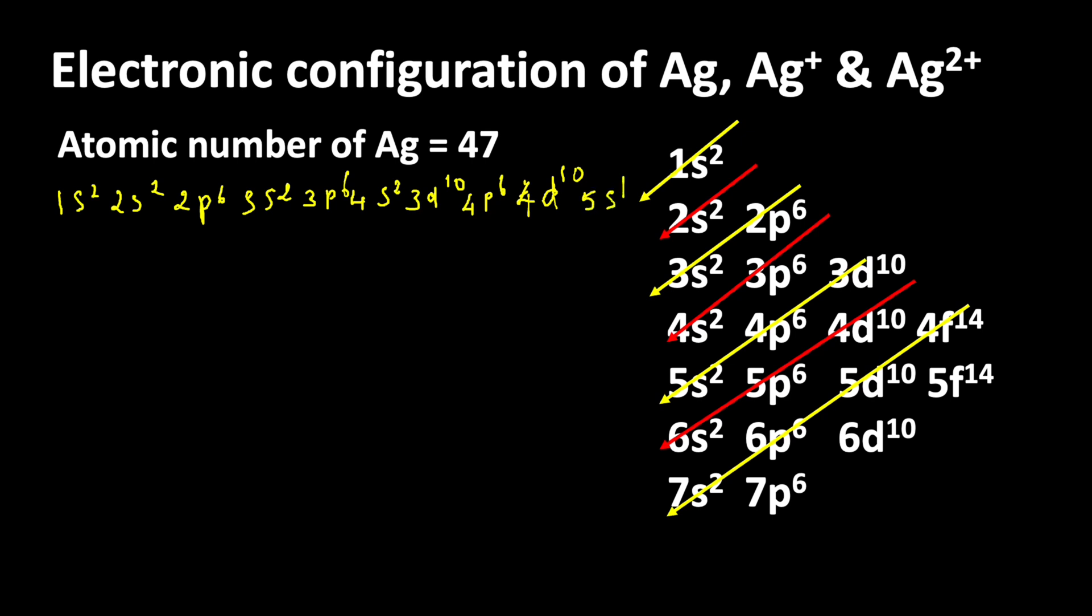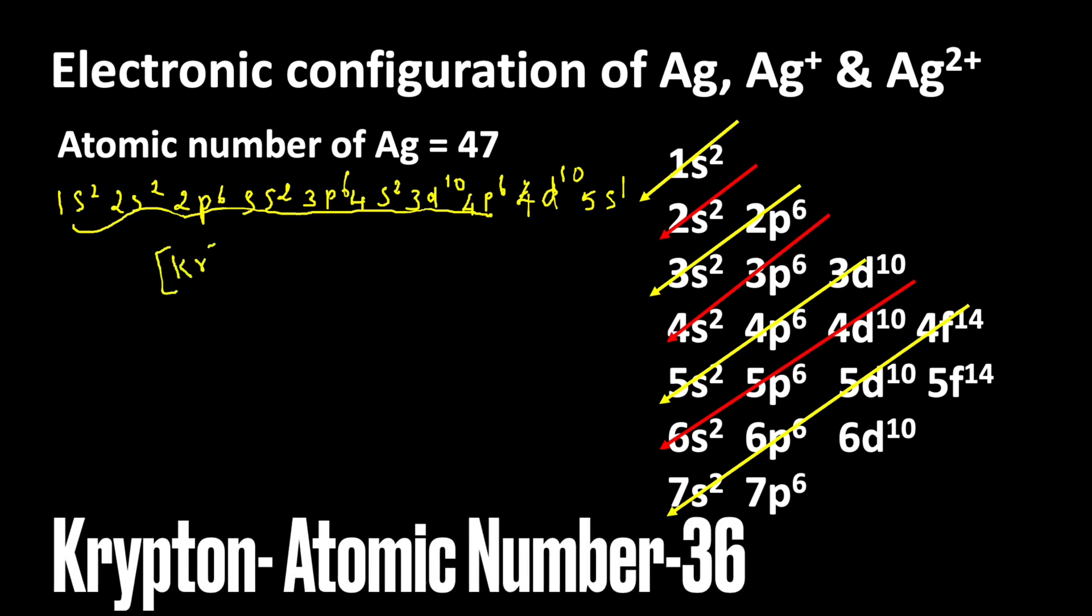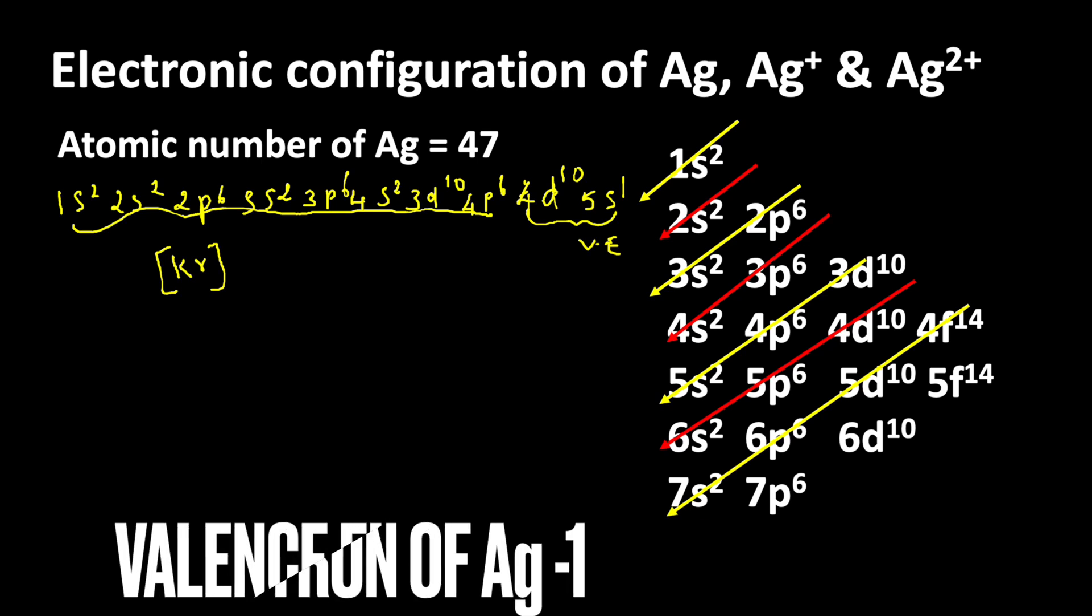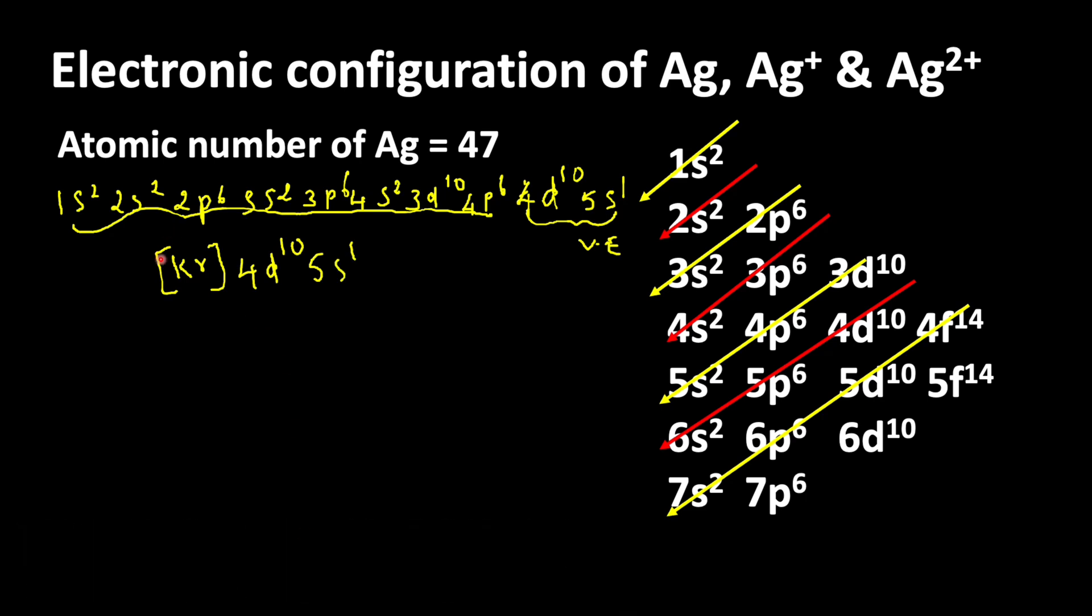This electronic configuration can also be written in shorthand notation using noble gas configuration. Up to 4p6 represents krypton. So write krypton in square brackets: [Kr] 4d10 5s1. This is the condensed electronic configuration of silver.